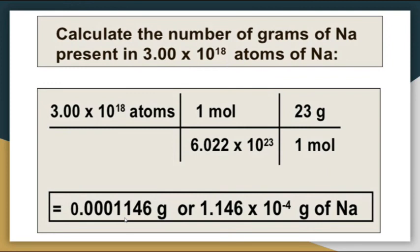Another example: Calculate the number of grams of sodium present in 3 × 10¹⁸ atoms of sodium. We are given 3 × 10¹⁸ atoms of sodium and we need to calculate mass in grams. This will also be solved in two steps. In step 1, we calculate number of moles. In step 2, the number of moles will be multiplied by molar mass to obtain the mass in grams.